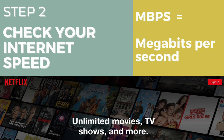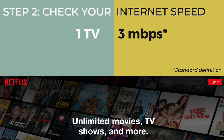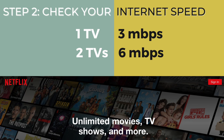Netflix and other streaming services recommend a minimum speed so that you can watch their content with no interruptions. Here's the catch: that speed applies to each device that you use. So if you have one TV watching Netflix — that's called one stream — your speed must be at least 3 megabits per second for standard definition quality. If you have two TVs watching Netflix at the same time, that's two streams, and each has to have at least 3 megabits per second, for a total of 6 megabits per second. Just multiply the number of devices streaming at the same time to get your total internet speed requirement. For the average person, chances are you're fine — 6 megabits per second is frankly not a lot.